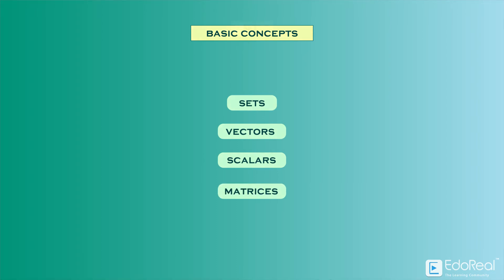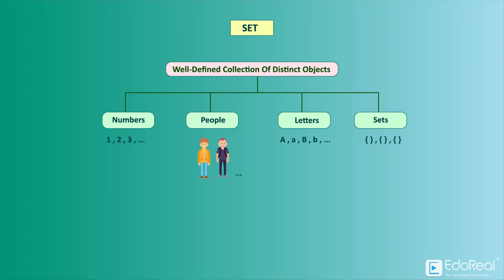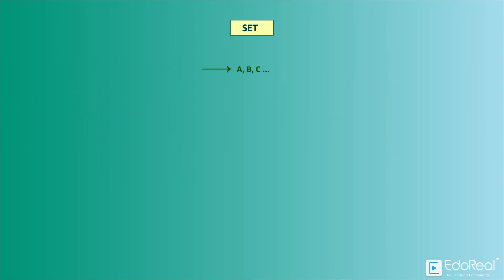Let us discuss the basic concepts like sets, vectors, scalars, and matrices that are helpful in this course. Set. A set is a well-defined collection of distinct objects. These objects can be anything such as numbers, people, letters of the alphabet, other sets, and so on. Sets are conventionally denoted with capital letters. A set can be specified by enclosing the members in curly brackets. A set can be denoted in roster notation, or it can be denoted in set builder notation.